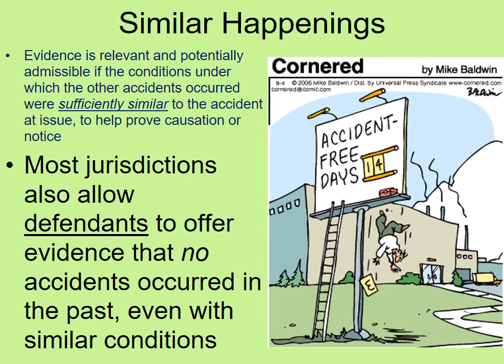Sometimes the situation is reversed and a defendant in a tort case wants to offer evidence that no other incidents or accidents have happened the way the plaintiff is claiming, even though conditions have been unchanged for a significant period of time under the same conditions. Most jurisdictions allow that as well.